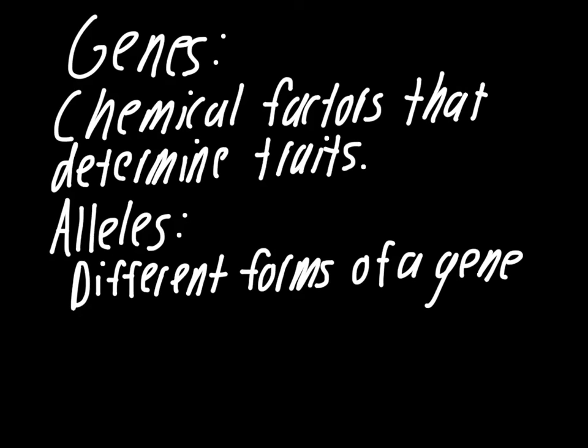Or a gene for pea height and then the allele would be either the allele for tall or short. So it's like the options, basically, the options for genes. The last term to talk about is probability.